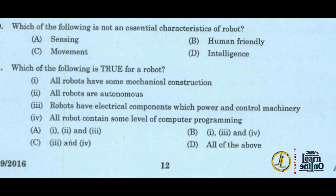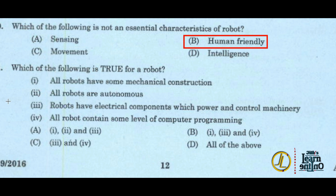First question: which of the following is not an essential characteristic of a robot? Option B, human-friendly, is not an essential characteristic. Next question: which of the following is true for a robot?